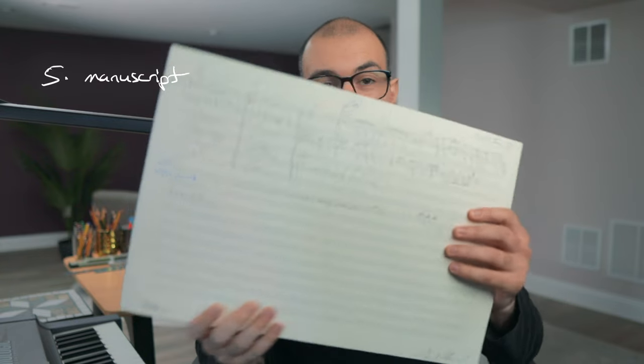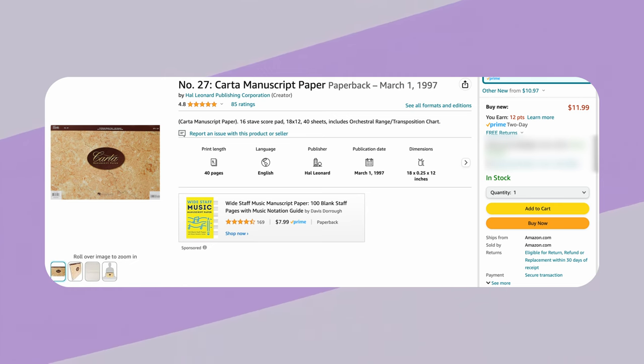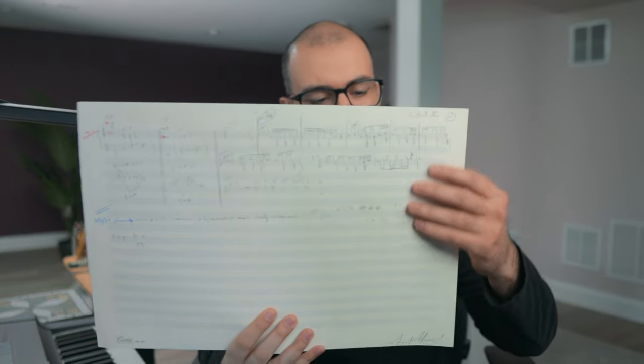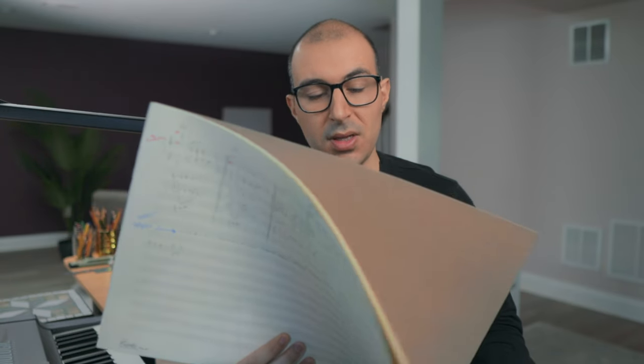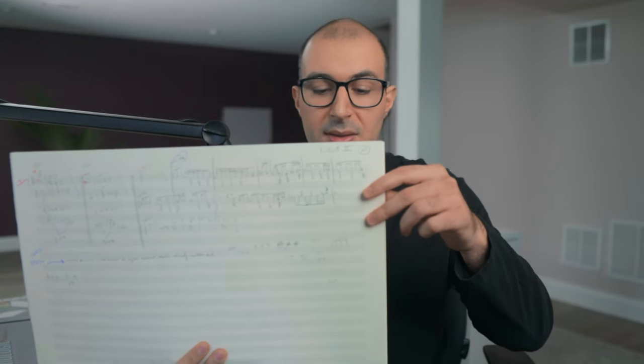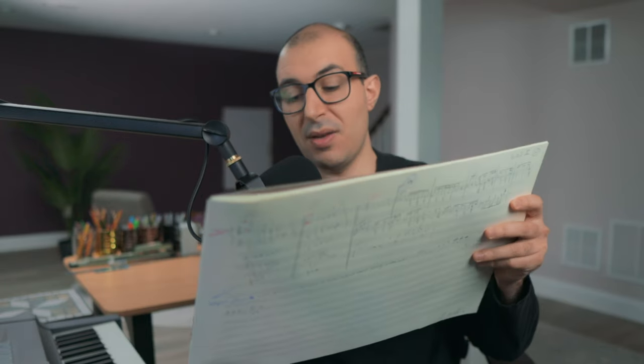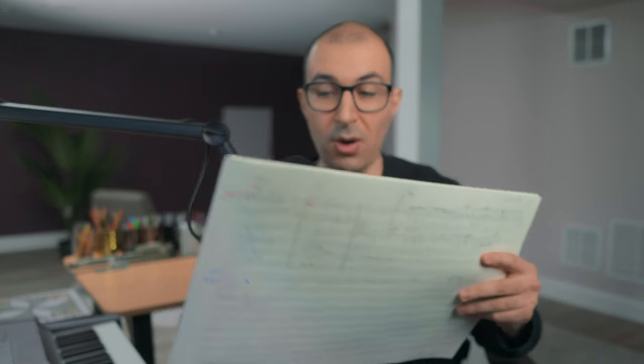Now let's go back to basics with something as simple as manuscript paper. I always recommend, especially for my students, that you write all your initial ideas on a sketchpad. This is Hal Leonard's Carta number 27 manuscript paper, which has 16 staves all the way down — great for big orchestral scores as well as solo pieces, since you can fit multiple systems on one page. It comes in 40 pages, feels really nice to the touch, and as much as I can, I try to put all my ideas onto paper before inputting them into the computer.